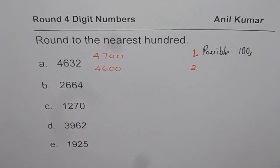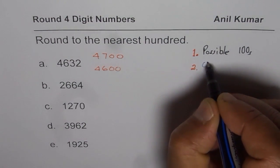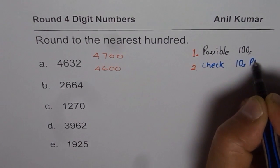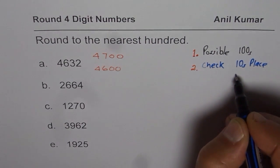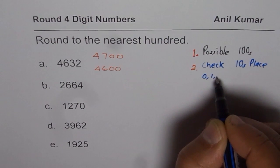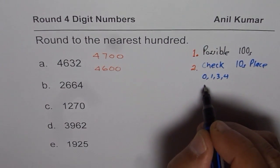The second thing which you need to check is the tens place. In tens place, if you have a number which is from 0 to 4—1, 2, 3, or 4—in that case you have to select the lower answer.